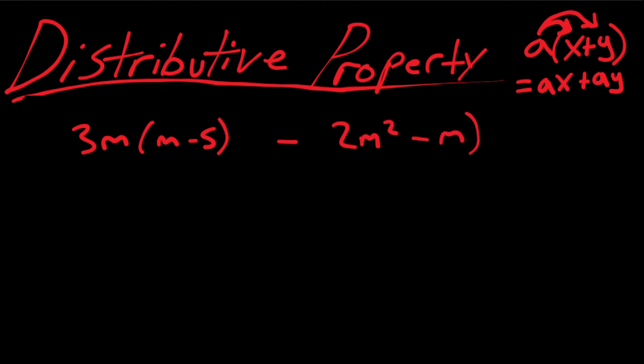Let's do another example. We have 3m times m minus 5 minus 2m squared minus m. Now let's do this first term. 3m times m, so that gives us 3m squared. And then we have 3m times negative 5, and that leaves us with negative 15m. We're subtracting this entire bracket.